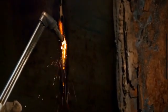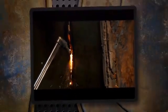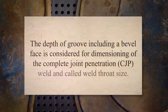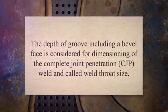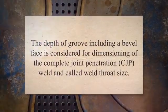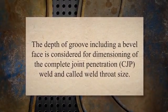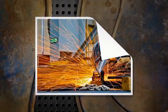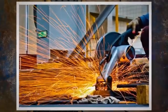For a CJP weld in a groove joint, the depth of the groove including the bevel face is considered for dimensioning of the complete joint penetration weld, and this is called the weld throat size. AWS D1.1 and CSA W59 have classified the CJP weld into two types.